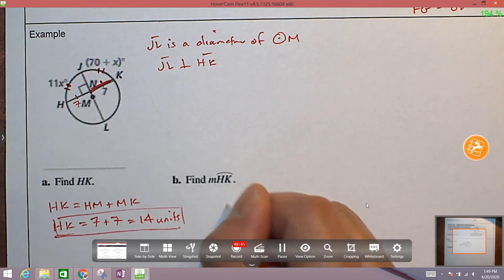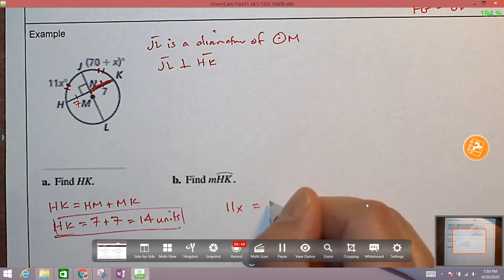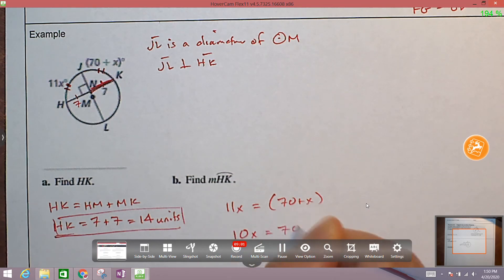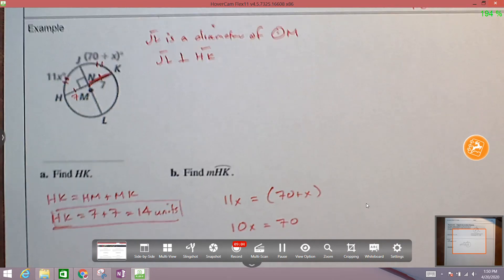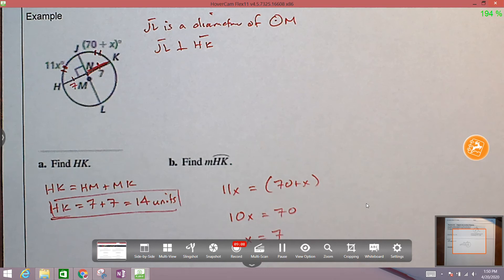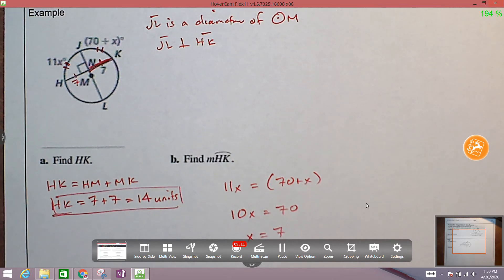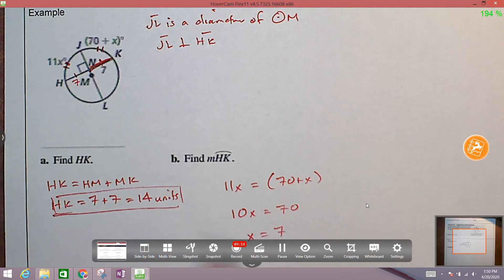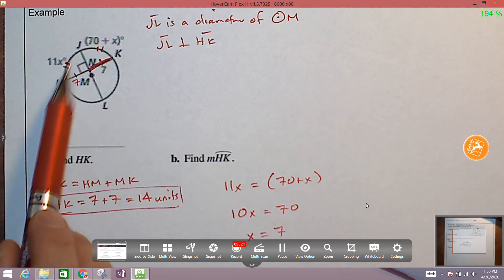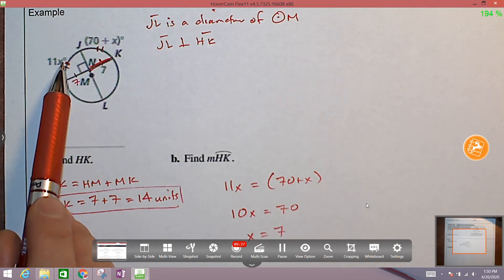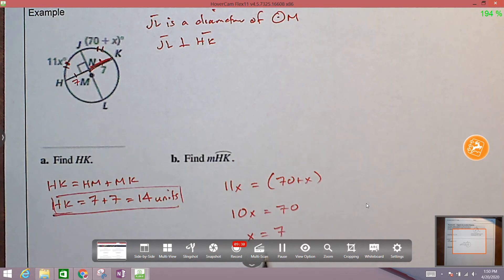So we know that 11x is going to equal 70 plus x. So now all we have to do is isolate x. So we're going to subtract x from both sides of this equation, leaving us 10x equals 70. Then we're going to divide by 10, and we get x is equal to 7. And in this case, I know over here we had units. We put 14 units. But in this case, x is not by itself. It's not the length of anything. It's just an unknown that is part of this measure, right? And it also says degrees up here and degrees up here. So x, we do not need units for that.